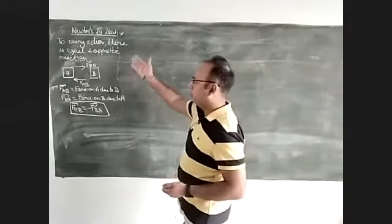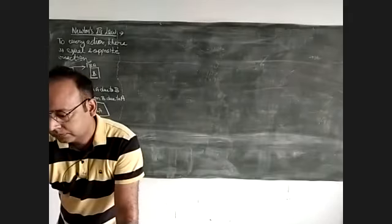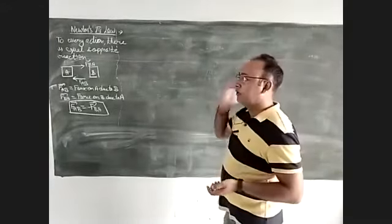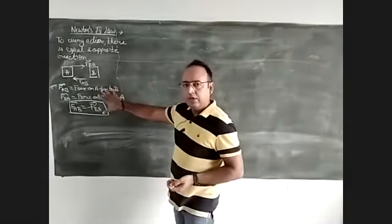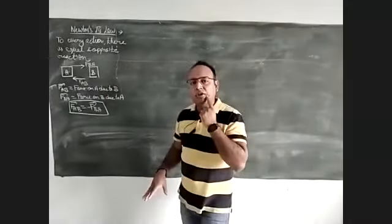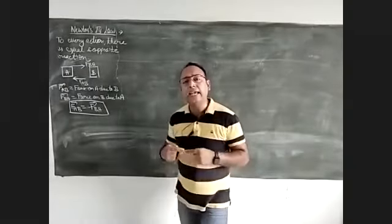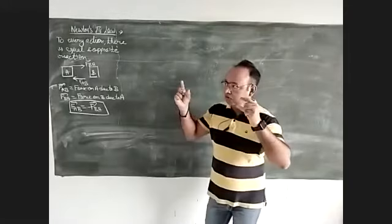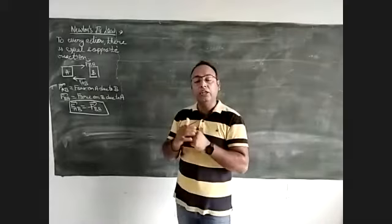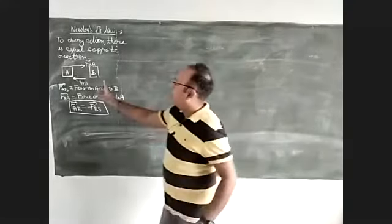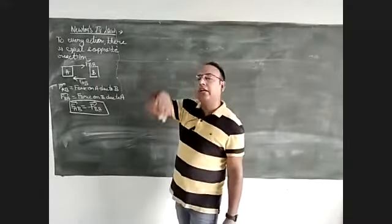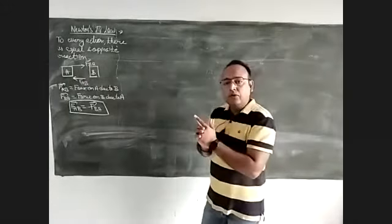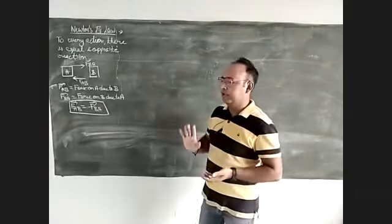Now one question can arise: we know that to every action there is an equal and opposite reaction, so why do these forces not cancel each other? Why is the net force not zero? In the beginning of the chapter we discussed that when two equal forces, equal in magnitude but opposite in direction, act on a body, the net force is zero. But here these two forces are not acting on the same body — one force acts on A and one force acts on B. So they cannot cancel each other because they act on two different objects.